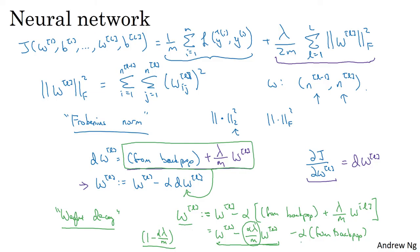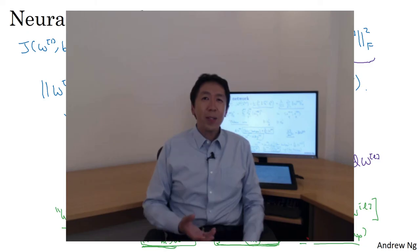It's just like ordinary gradient descent where you update W by subtracting alpha times the gradient from backprop, but now you're also multiplying W by something slightly less than 1. The alternative name for L2 regularization is weight decay. The intuition is that you're multiplying the weight matrix by a number slightly less than 1. That's how you implement L2 regularization in a neural network.